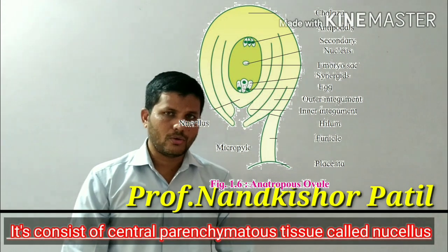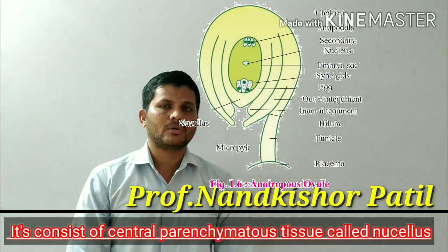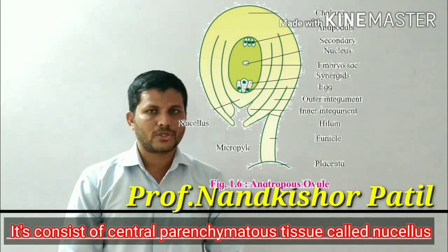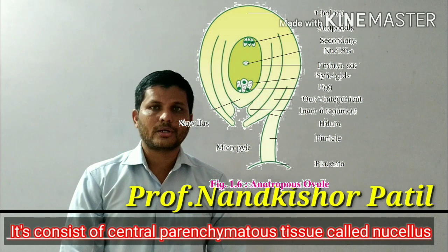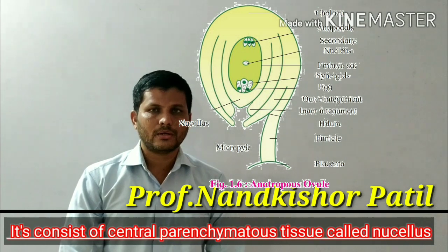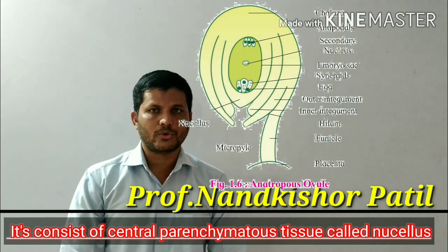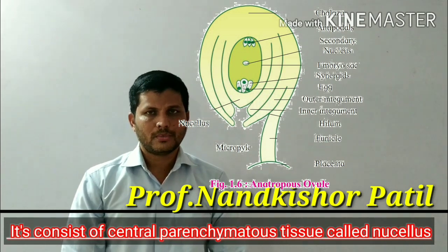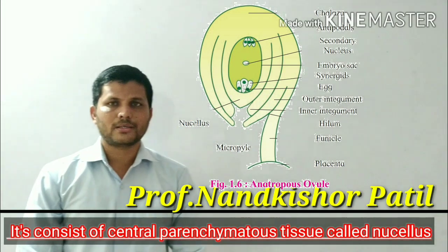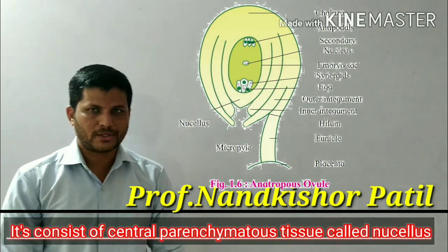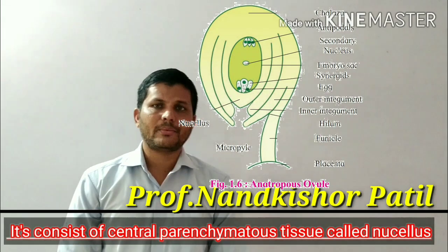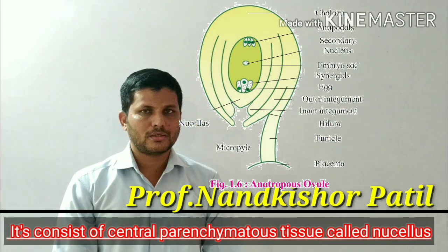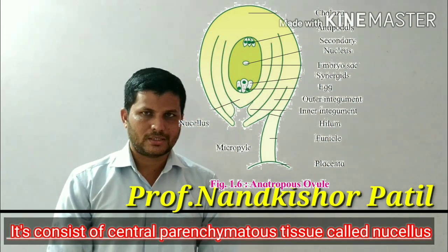The ovule consists of the parenchymatous tissue, which is protected by two layers — two protective coverings — which are called as the integuments. And that parenchymatous tissue is called as the nucellus.